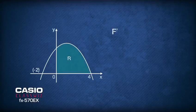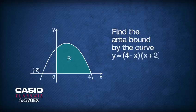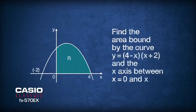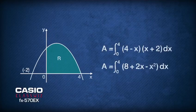The question is: find the area bound by the curve y equals (4 minus x)(x plus 2) and the x-axis between x equals 0 and x equals 4. Before integration, expand the equation of y into y equals 8 plus 2x minus x squared.